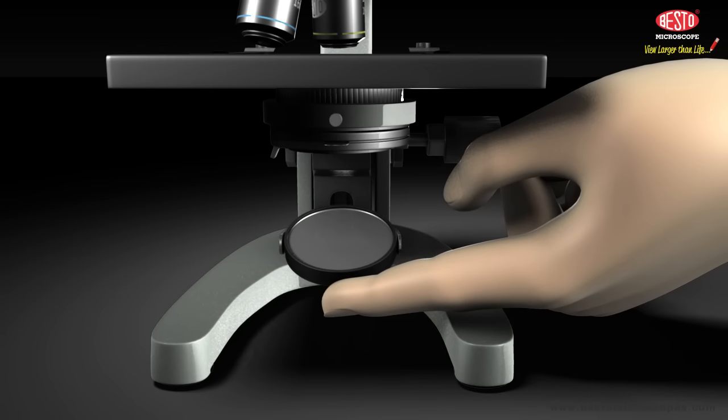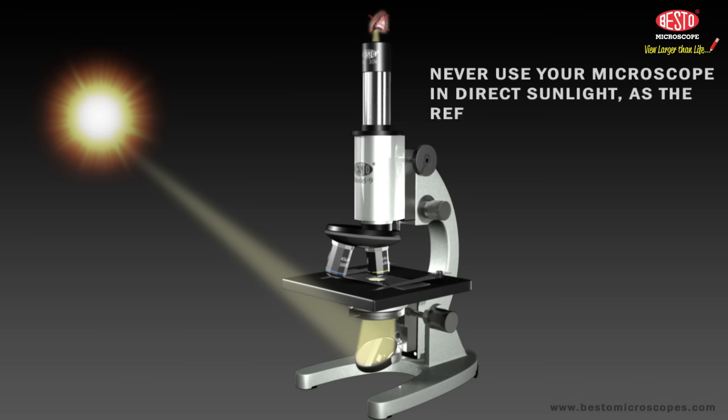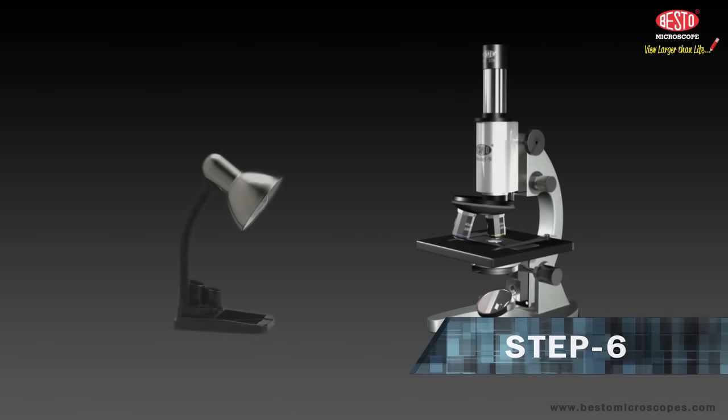Here's a helpful hint for you: Never use your microscope in direct sunlight, as the reflected light could damage your eyes. Step 6: If you are using a lamp for your lighting, put it about 20 centimeters away from the microscope.